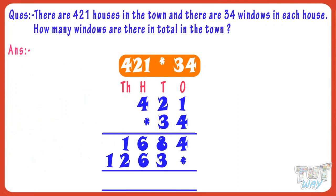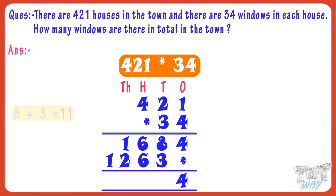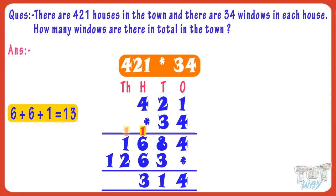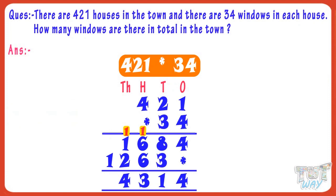Now we have multiplied 421 with both digits of 34. Now add the products. 4 plus 0 equals 4. 8 plus 3 equals 11 — write 1, carry over 1. 6 plus 6 plus 1 carry equals 13 — write 3 and carry over 1 to the next place. 1 plus 2 plus 1 carry equals 4. Write 4 in the sum. 4,314 is our product of 421 multiplied by 34.